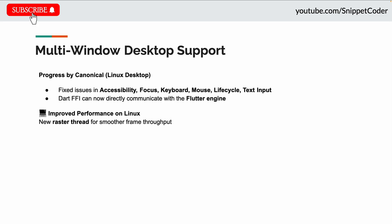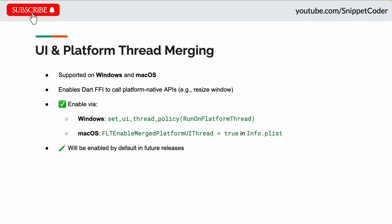The next update is multi-window desktop support. Thanks to Canonical, Flutter is now moving closer to full multi-window desktop apps, fixing issues across accessibility, keyboard focus, lifecycle, and input. FFI can now directly communicate with the Flutter engine, paving the way for advanced windowing features on Linux. A new raster thread keeps the app smooth even with multiple windows.